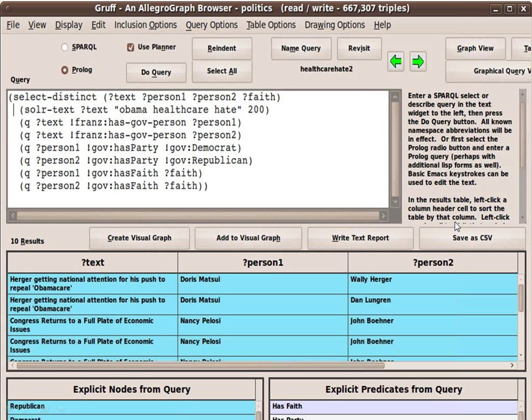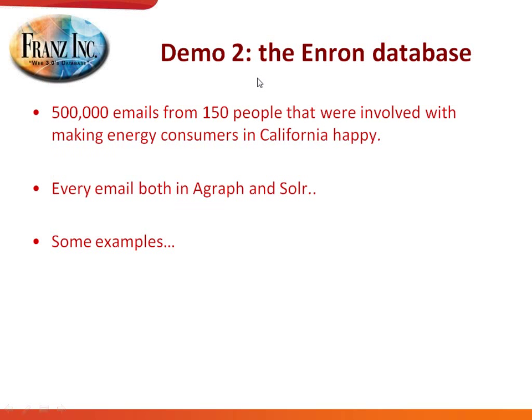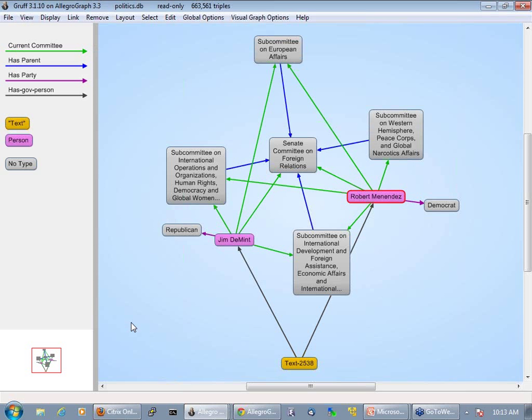The second demo uses a much larger data set — the Enron database. I guess at least all the American attendees know what Enron was — a company in California in the energy business. We have about 500,000 emails from about 150 people. Those emails were collected in the lawsuit. We store every email both in AllegroGraph and Solr.